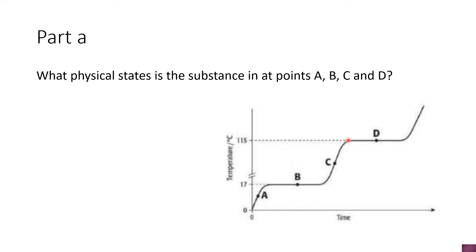During points B and D we have to assume the substance exists in two states. Point B is the melting point — the substance exists as solid and liquid because point B is placed halfway along the line, meaning the solid has not entirely turned to liquid. At point D, which is also placed in the middle of its horizontal line, the liquid has not entirely changed to gas, so the substance exists as liquid and gas.